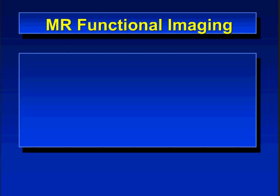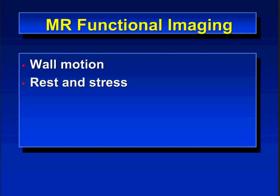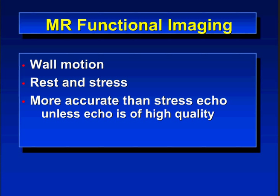Let's move on to functional imaging, which refers to wall motion evaluation. This can be done at rest and stress. Rest functional imaging is quite useful for quantification of volumes — left and right ventricular end-diastolic volume, end-systolic volume, stroke volume, and ejection fraction. For stress, you assess wall motion. MR is more accurate than stress echocardiography in patients with moderate-quality stress echo. In thin patients where stress echo is high quality, both perform similarly, but in most patients MR is better.